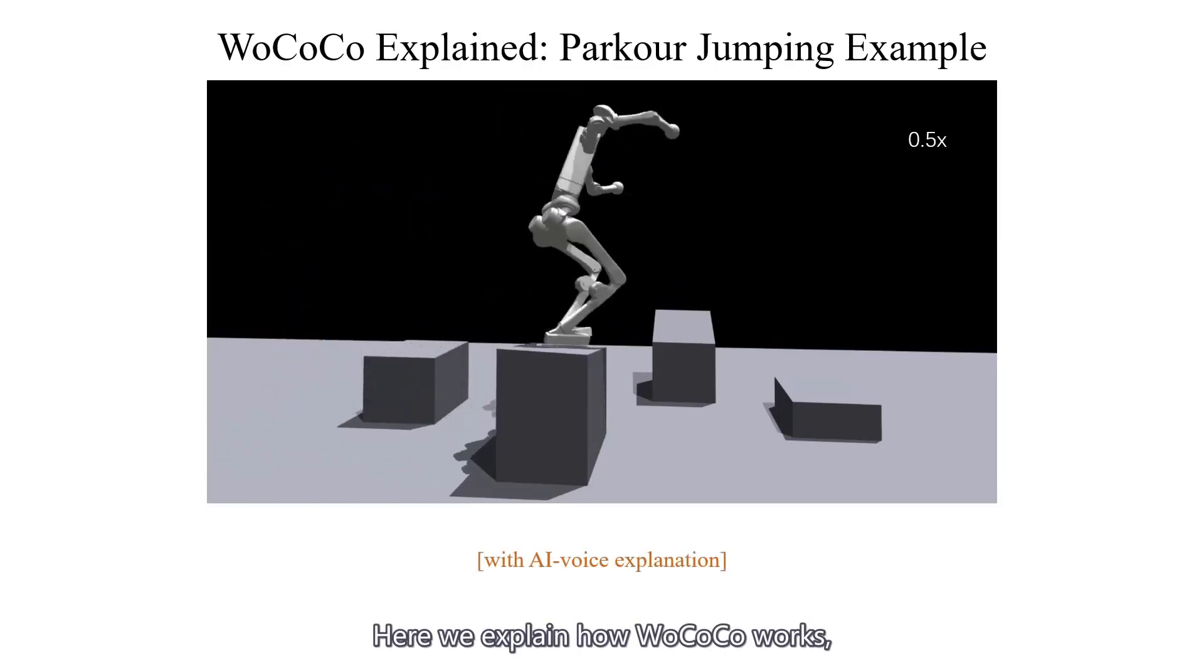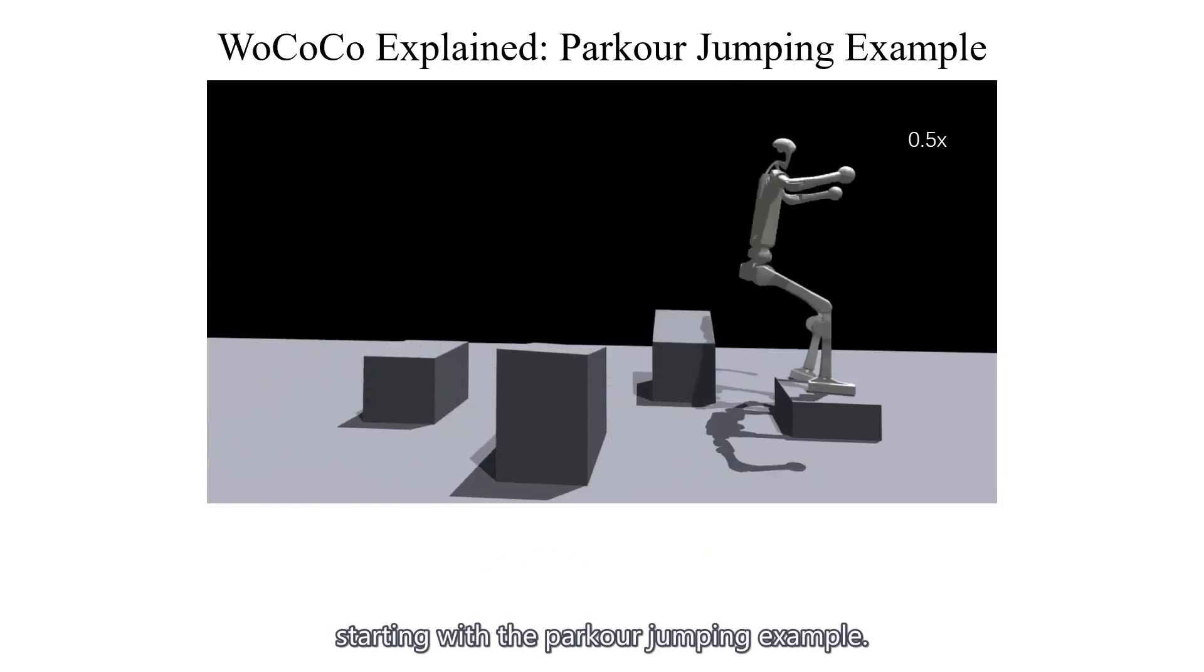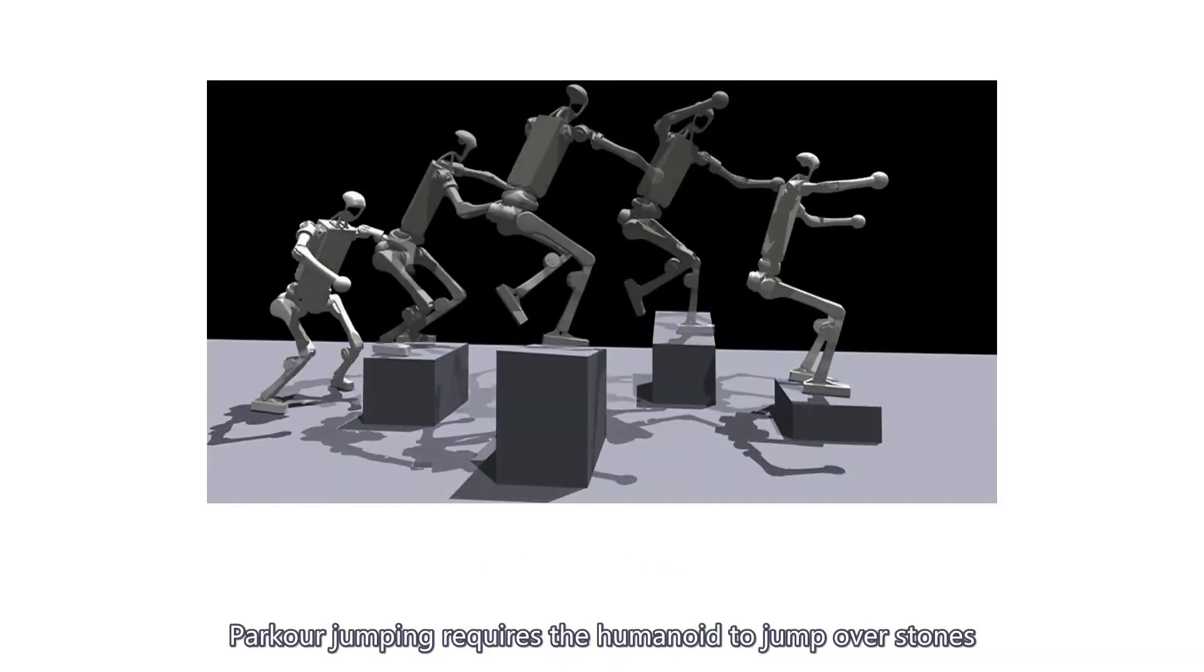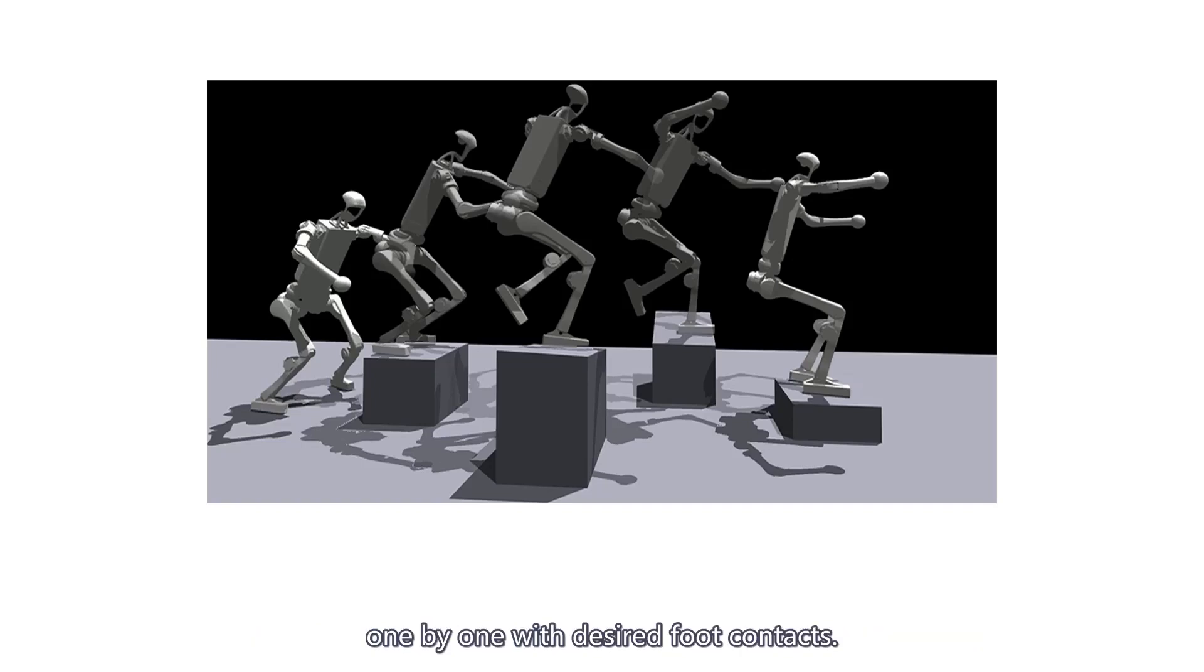Here we explain how Wokoko works, starting with the parkour jumping example. Parkour jumping requires the humanoid to jump over stones one by one with desired foot contacts.